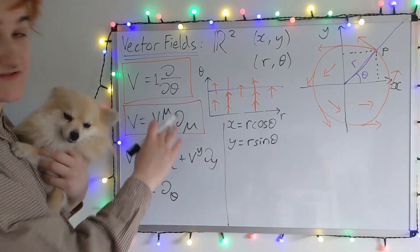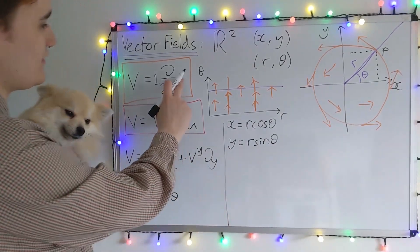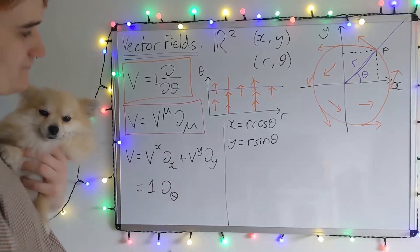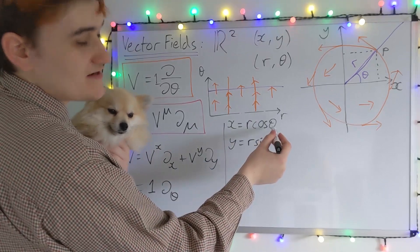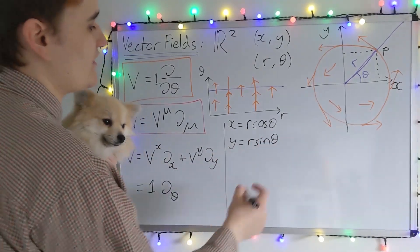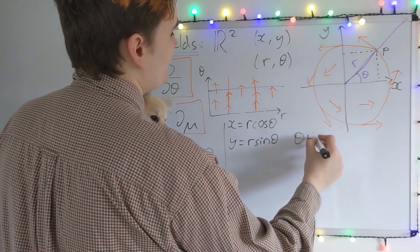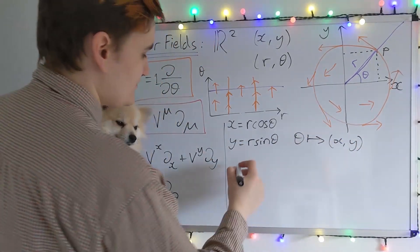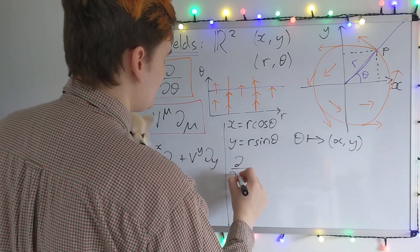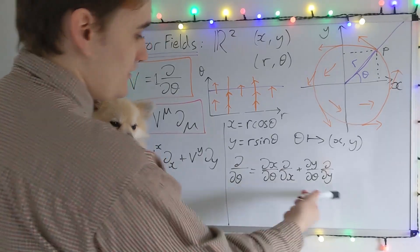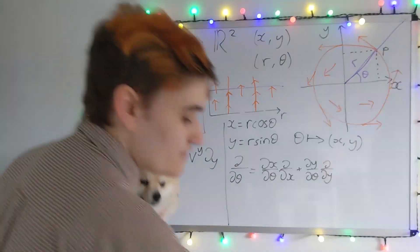So now all we need to do is use the chain rule again to express D by Dθ in terms of D by DX and D by DY. So you can see here that theta is mapping to both X and Y. So when we use the chain rule, we're going to have to have it for a multivariable function. So if I just write down the expression. Okay, hopefully you can see why this is correct. It's just using the chain rule.